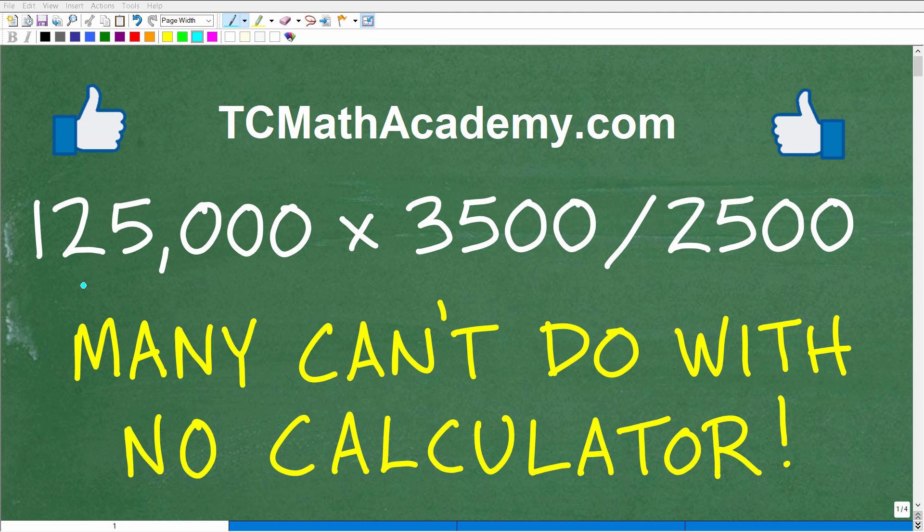Okay, so how well do you remember basic math? Well, if you have pretty strong basic math skills, then doing this problem right here without the aid of a calculator should be somewhat easy. Let's go ahead and take a look at the problem. We have 125,000 times 3,500 divided by 2,500. And again, we do not want to use our calculators.